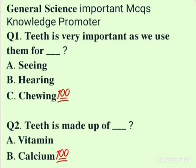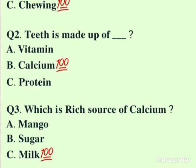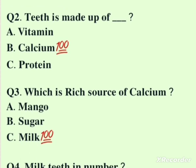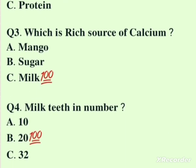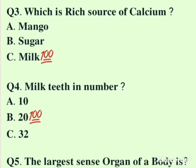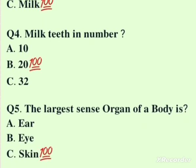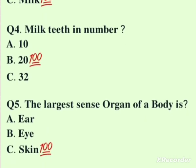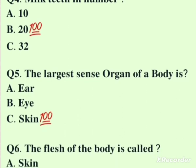Teeth are very important as we use them for chewing. Teeth are made up of calcium. A rich source of calcium is milk. Milk teeth number 20 — kids have 20 teeth, while adults have 32 teeth.